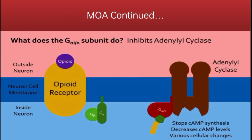The G-α-i/o subunit stops cAMP synthesis by interacting with and inhibiting adenylyl cyclase. This results in a decrease in cAMP levels, which can also result in structural, enzymatic, and molecular changes, due to which various signaling pathways are no longer being activated or inhibited. These changes affect neurotransmitter release and opioid tolerance and can happen on both pre-synaptic and post-synaptic neurons. In this way, opioids stop signal transmission between neurons, resulting in an analgesic effect.